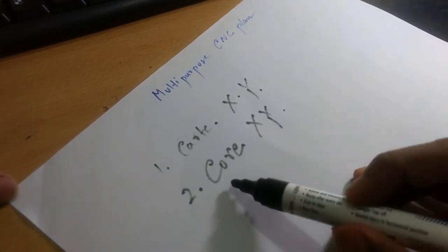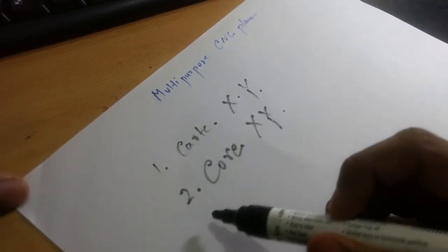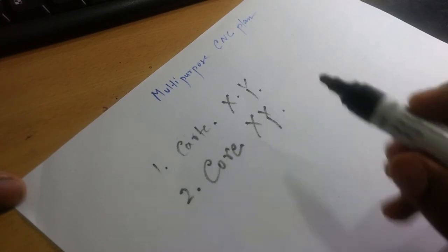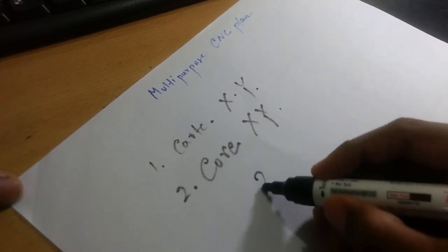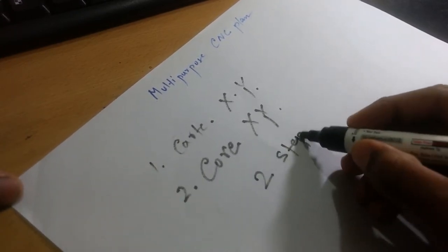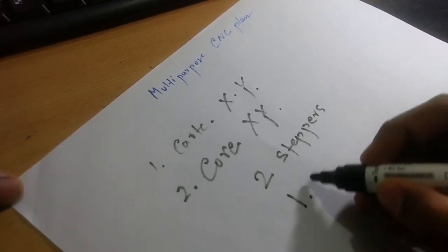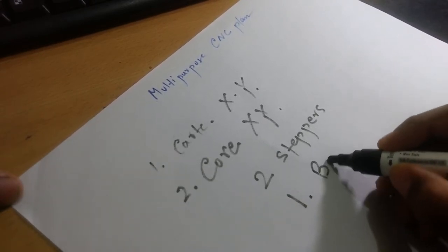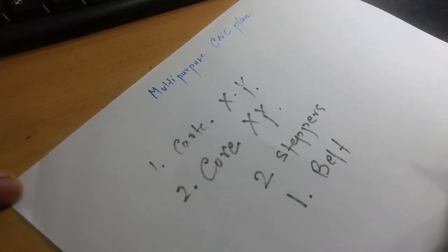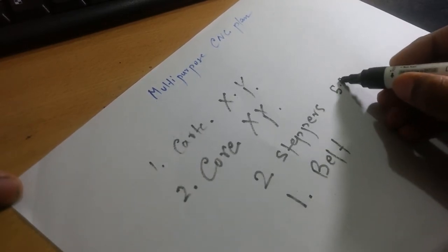In Code XY, we will be using two steppers and a single belt. I am using steppers of 5.5 kg-cm, whereas the belt I am using is GT2 of 6mm. Okay, so these are the two key factors.